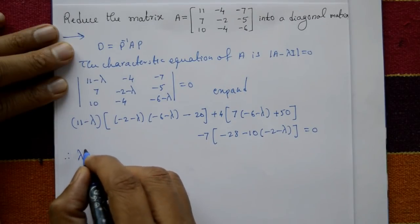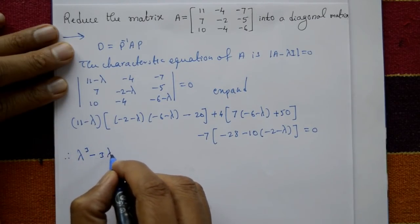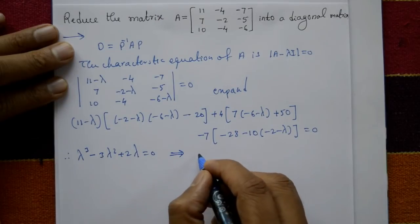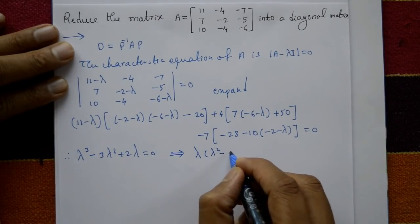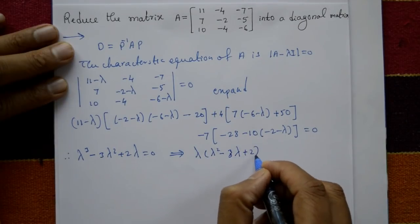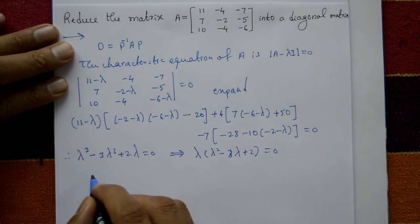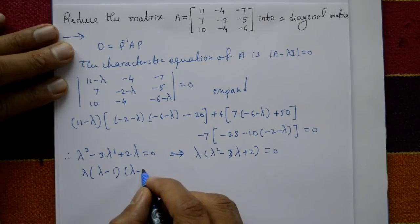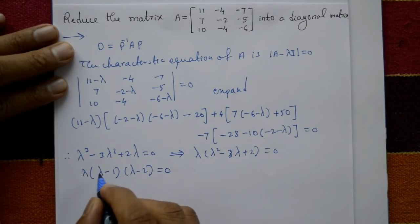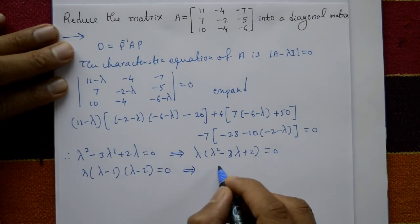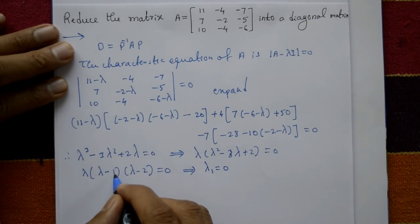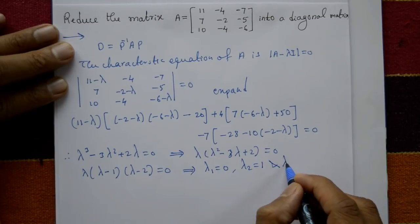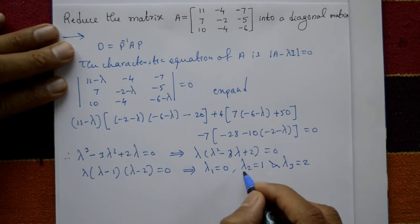Simplifying, we get: λ³ minus 3λ² plus 2λ = 0. Taking λ common: λ(λ² - 3λ + 2) = 0. Factorizing: λ(λ-1)(λ-2) = 0. So the eigenvalues are λ₁ = 0, λ₂ = 1, and λ₃ = 2.